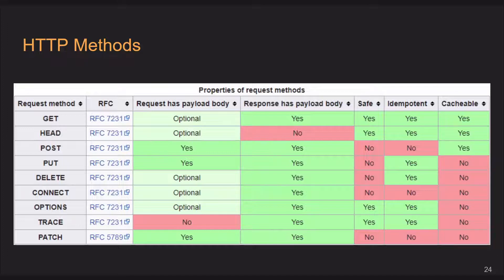TRACE — I have never really seen it used, but it's kind of similar to traceroute as far as I understand. PATCH is not used very often, but VMware tends to use it a lot in vSphere and NSX-T. Basically it allows a list of changes to a resource to be sent and those will be applied.